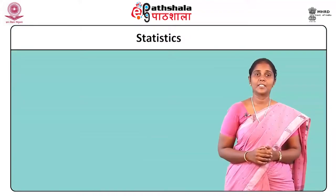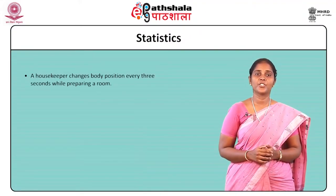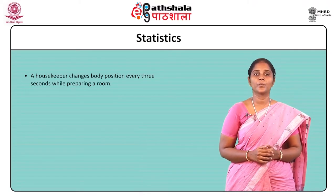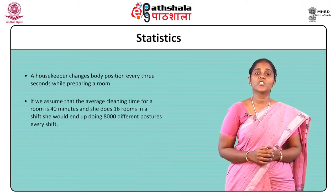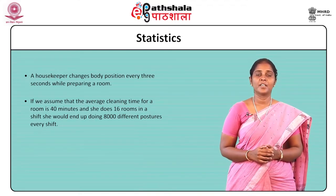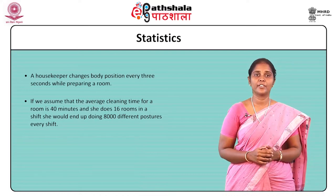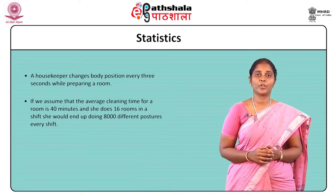Linen keepers have to stretch to get linen and uniforms from higher shelves. Housemen have to lift heavy furniture and carpets to clean or rearrange them. Statistics show that a housekeeper changes body position every 3 seconds while preparing a room. If the average cleaning time for a room is 40 minutes and he or she does 16 rooms in a shift, they would end up doing 8,000 different postures every shift.